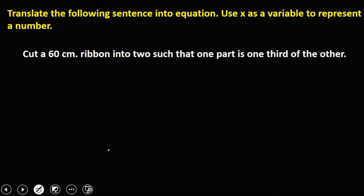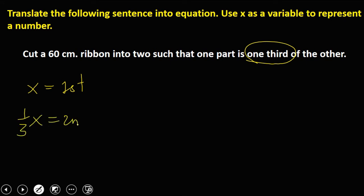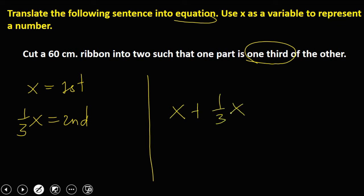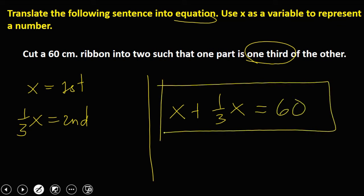'Cut a 60 cm ribbon into 2 parts such that one part is 1/3 of the other.' Let x be the first part. The second part is 1/3 of x. To create the equation, the first part plus 1/3 of x is equal to 60. So the equation is: x + (1/3)x = 60.